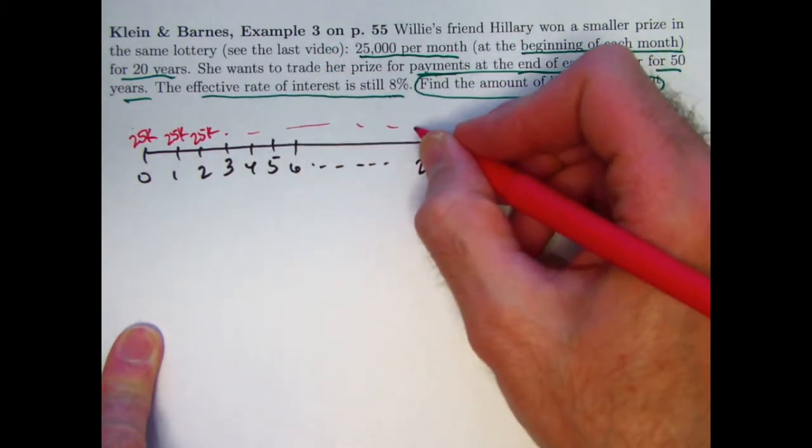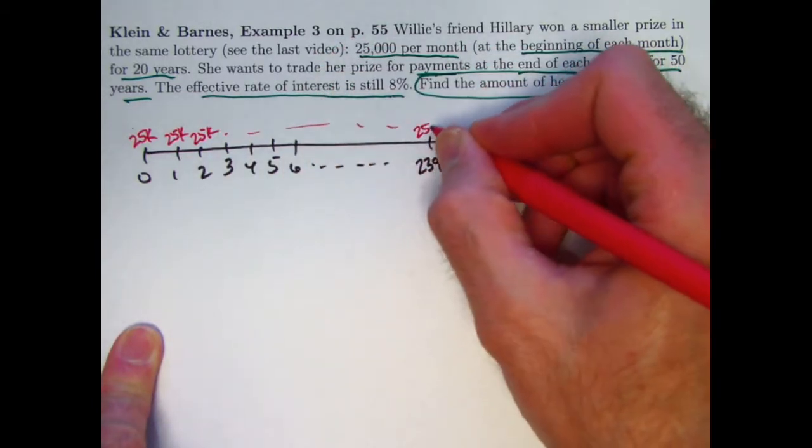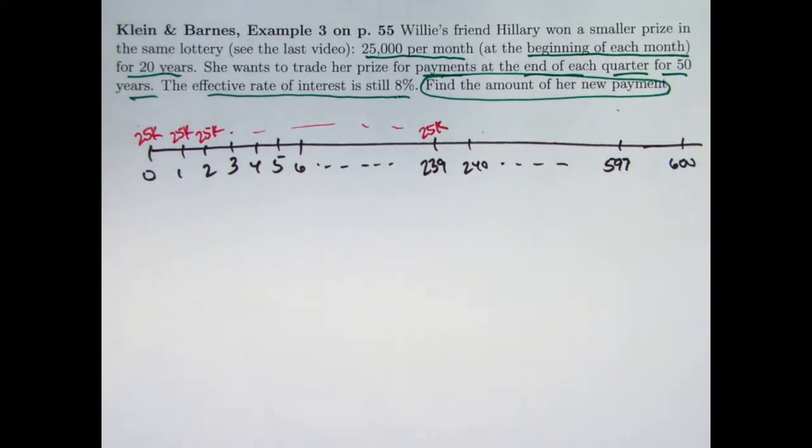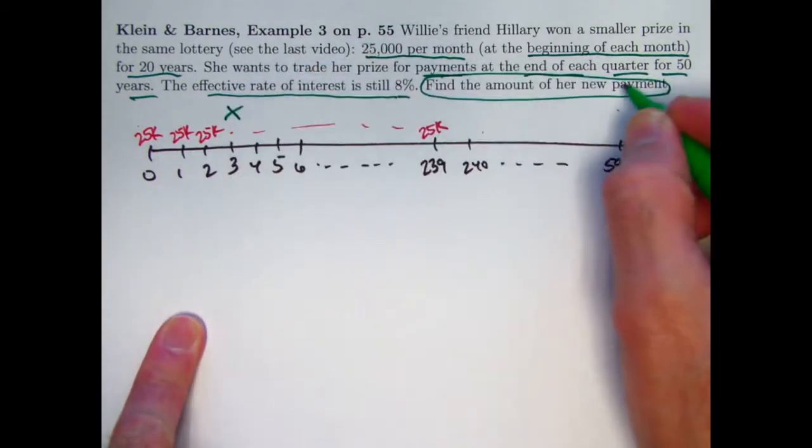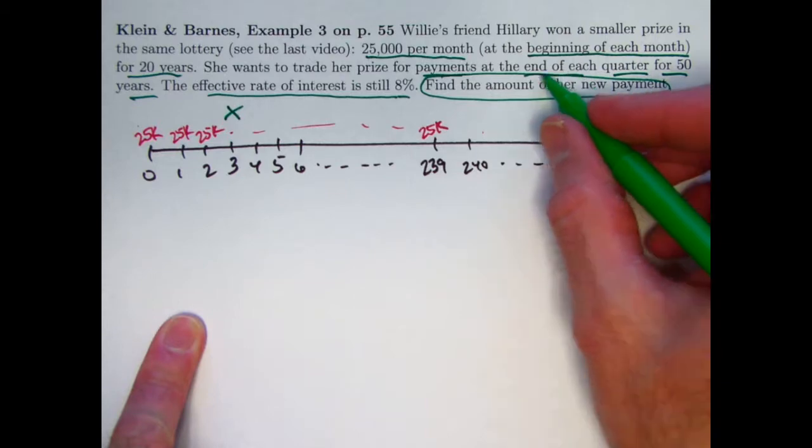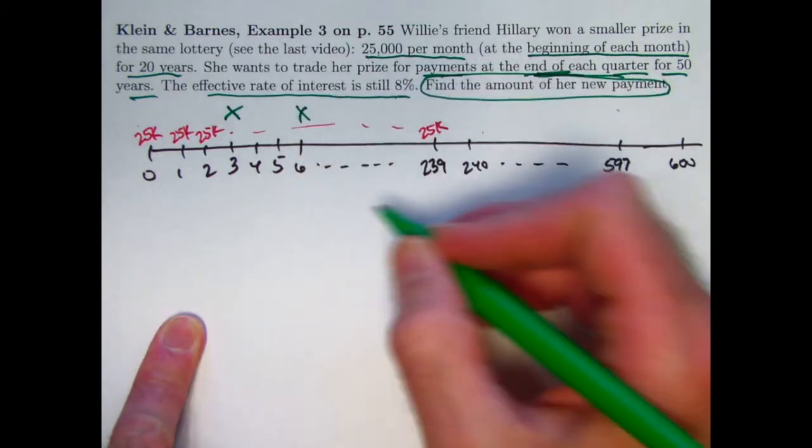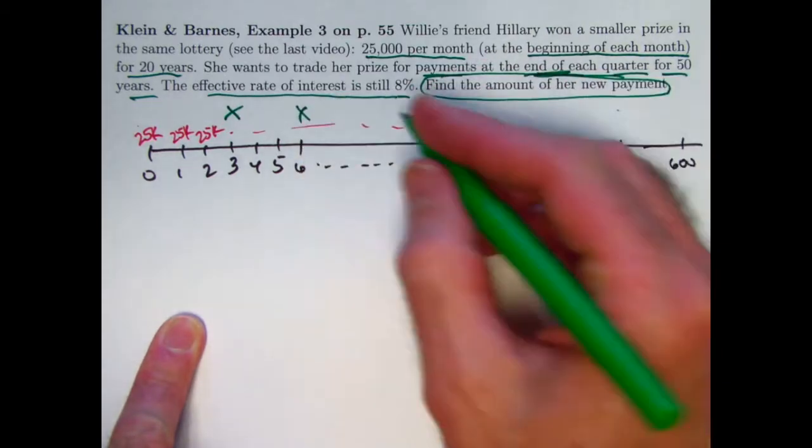240 payments of 25,000. The last one's going to be at time 239. And then the other annuity is quarterly. The first one is at time three. It's an annuity immediate. They're at the end of each quarter there. Second one's at time six, then time nine, then time 12, then time 15, et cetera.